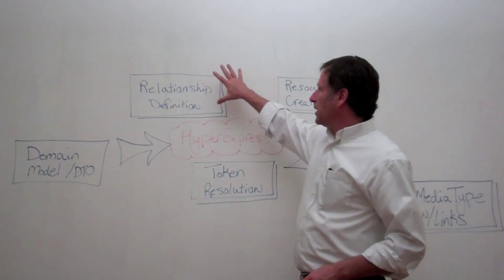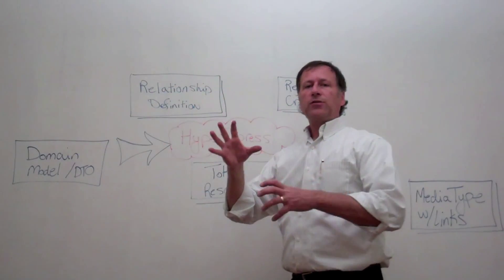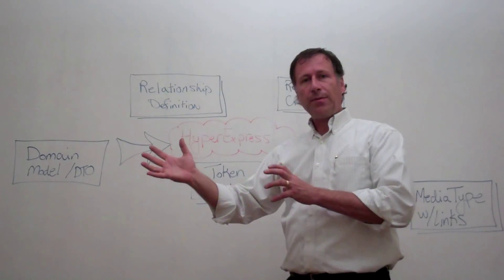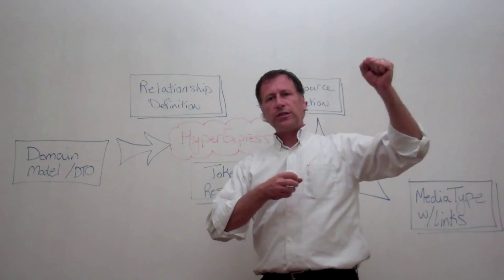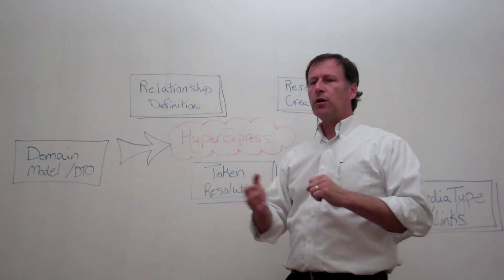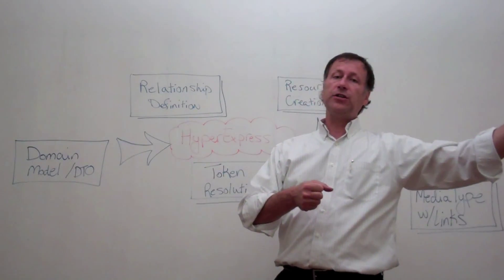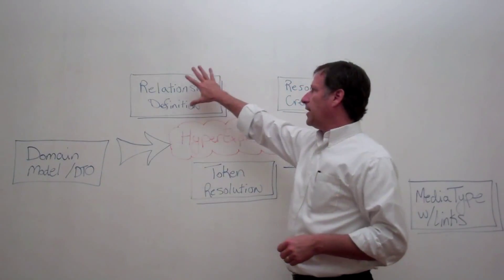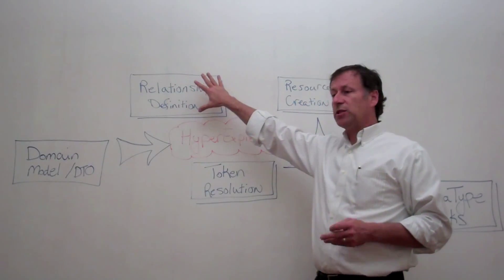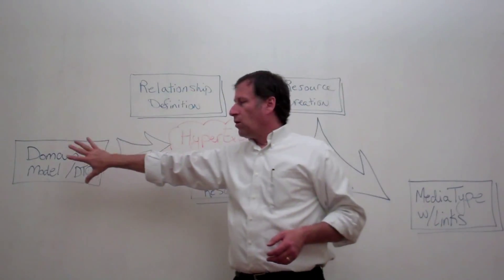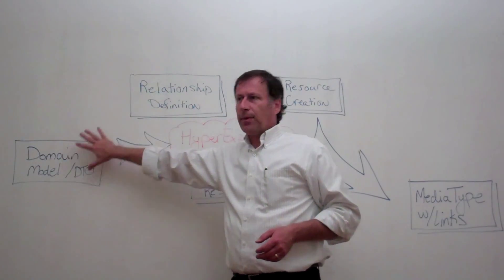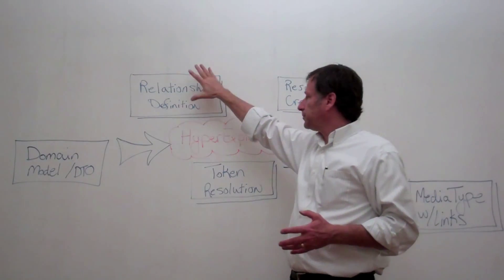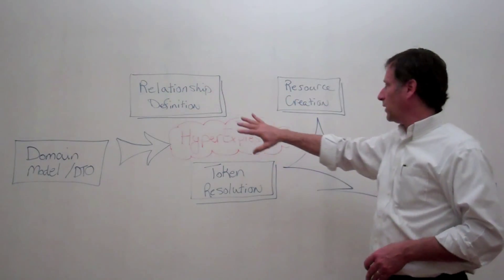HyperXpress is built around the concept of a relationship definition. That's where you define the relationships between your objects. So if a course has a relationship to a user, or a course has a relationship to course sections, those kinds of things, or a student has a relationship to courses, that's where you would define your relationships. So that's the concept of a relationship definition.